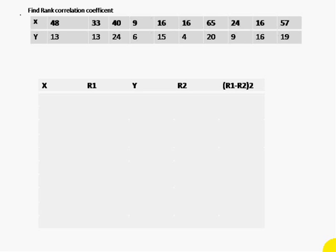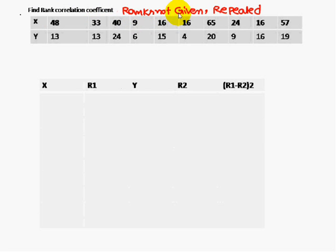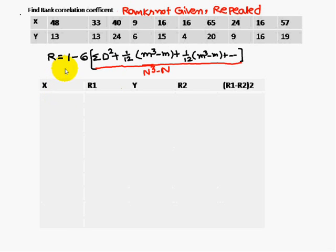Today we are going to discuss how to calculate the rank correlation coefficient when the ranks are not given and the ranks are repeated. The formula for the rank correlation coefficient is: r is equal to 1 minus 6 into sigma d square plus correction terms.